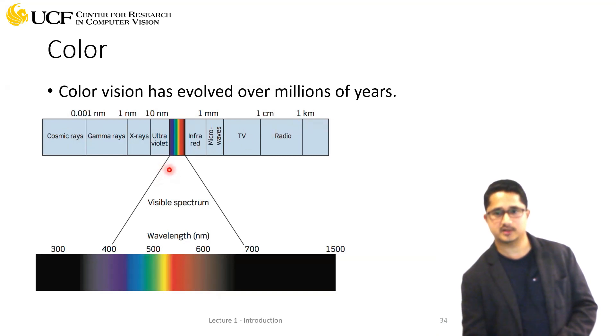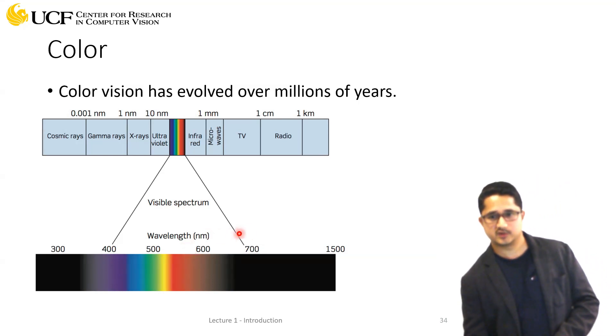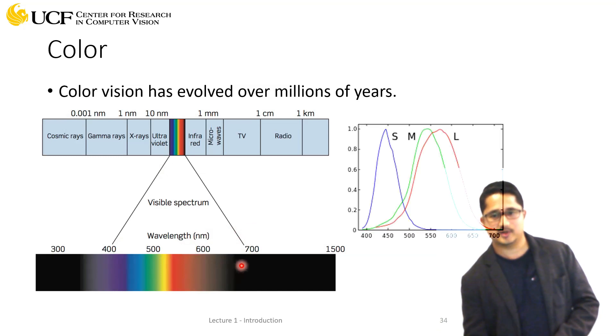Human vision responds to wavelengths between 400 to 700 nanometers. This is the wavelength where we see colors. At 700, this corresponds to red, as shown in this plot. It peaks around 560 or 570. On the left we have green.